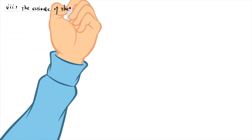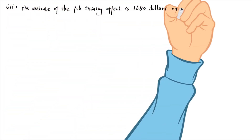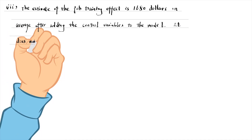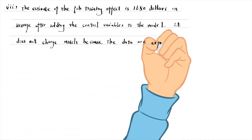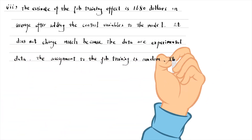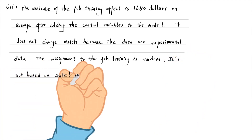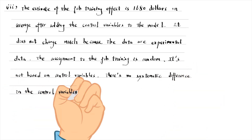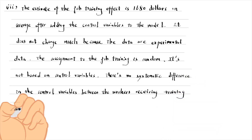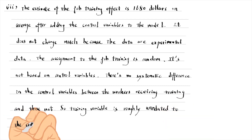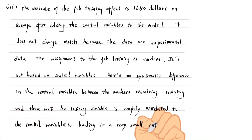For part 3, the estimate of the job training effect is $1,680 on average after adding the control variables to the model. It does not change much because the data are experimental. The assignment to the job training is random in the sense that the assignment is not based on the control variables. So the job training variable is roughly unrelated to the control variables, leading to a very small omitted variable bias.